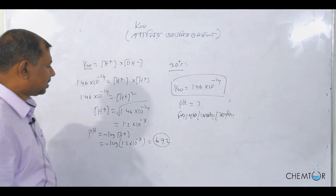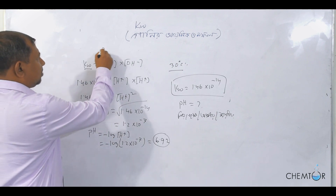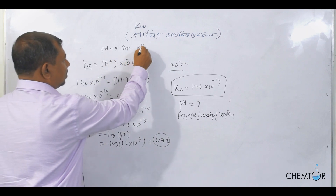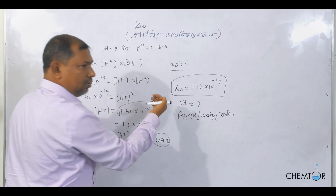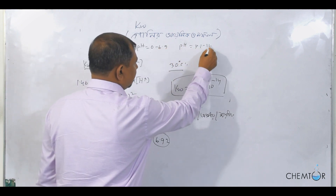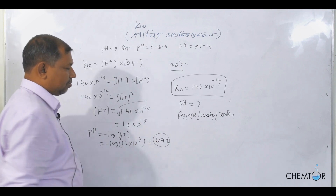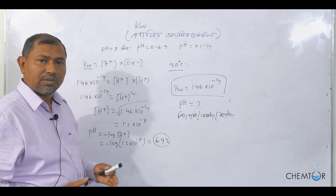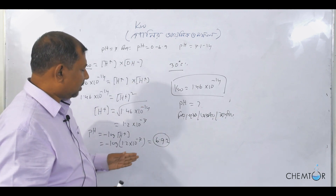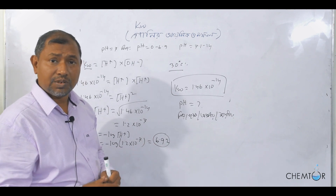This is what we call pH. Now, pH is less than 7, so pH from 0 to 6.9 is acidic. pH equal to 7 is neutral. pH from 7.1 to 14 is basic. Our calculated pH of 6.92 is slightly acidic.